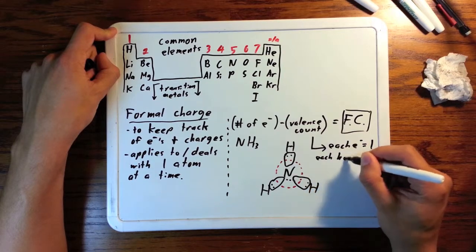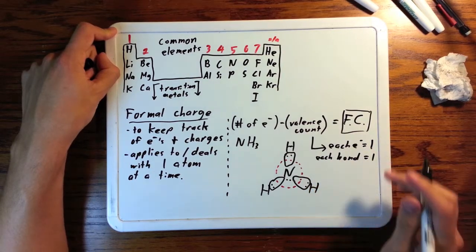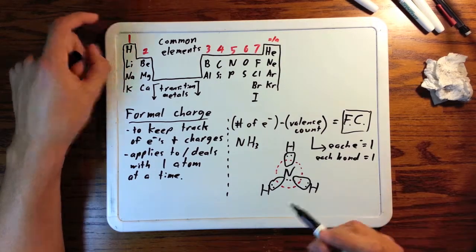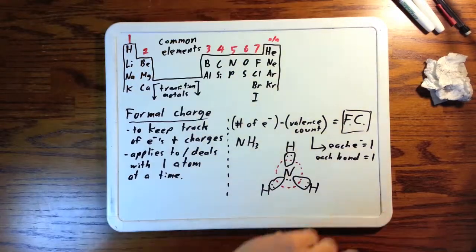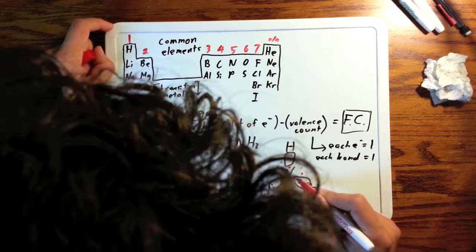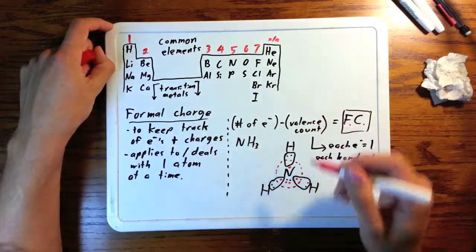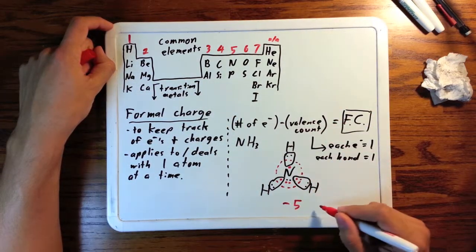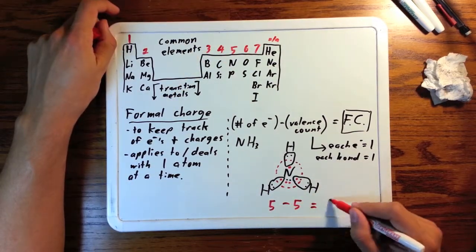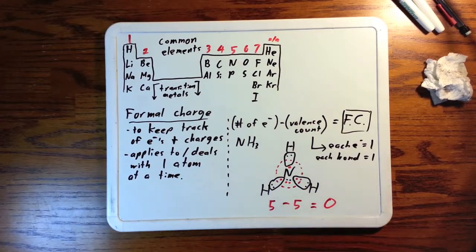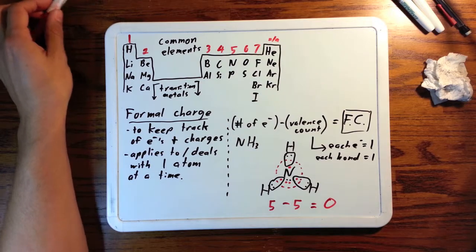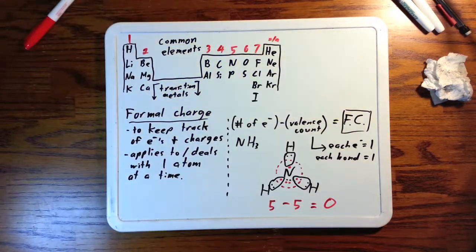For valence count, you count each electron around the atom as one. For each bond, even though there's two electrons in the bond, each bond counts as one for valence count. So you look at the number of things around it, whether it's a dot or a line, and that's one. For this nitrogen, there's one, two, three bonds, and one, two electrons. That's five. I don't know why I wrote this backwards, but we're subtracting five in the valence count from five on the periodic table. The number of electrons nitrogen wants around it to be happy, and turns out it is happy. Its formal charge is zero in ammonia.